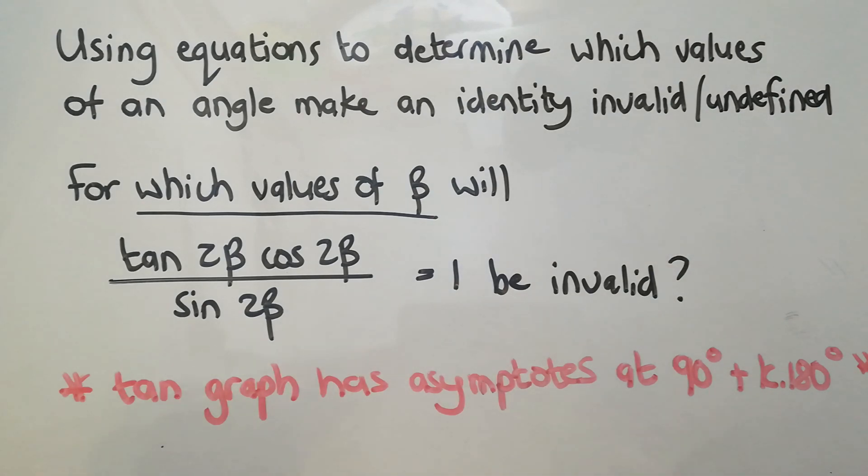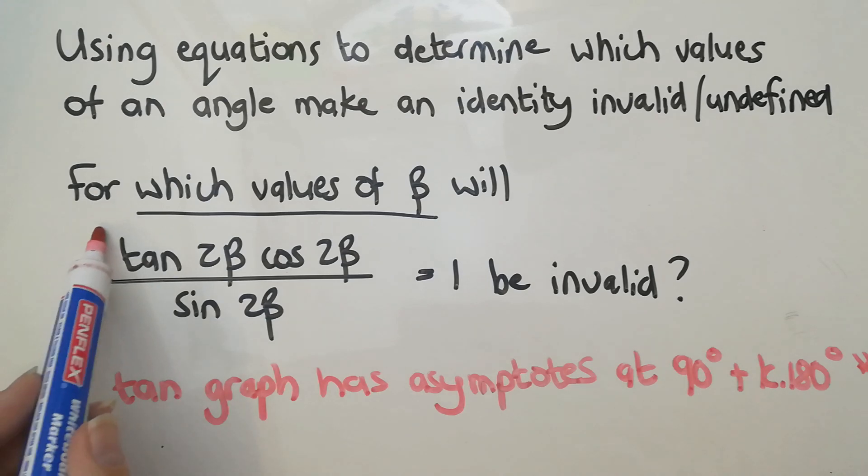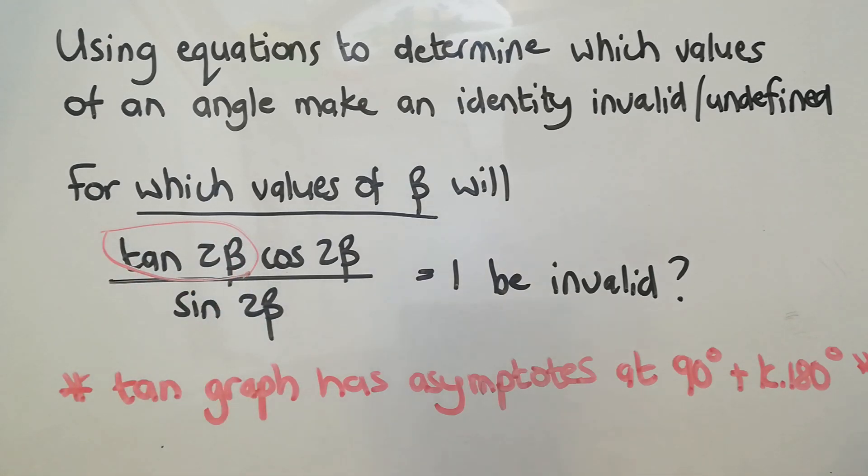So what we're saying there is that this thing is going to be a problem if the degrees are going to be 90 plus k180. So it's all fine, but this whole thing is going to be completely invalid if I end up with a value where 2β is equal to 90 degrees or any version of the 90 degrees.